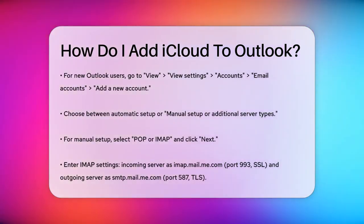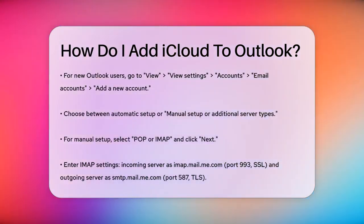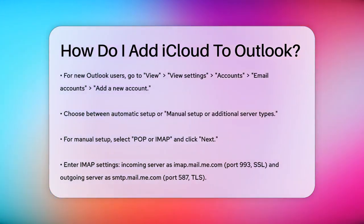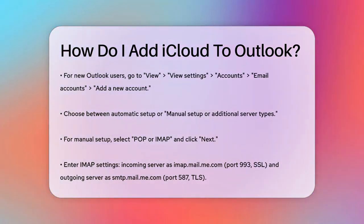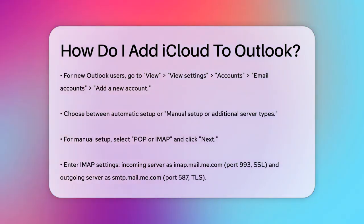In the Add Account dialog box, you can either let Outlook try to set it up automatically or select Manual Setup or Additional Server Types. For Manual Setup, choose POP or IMAP and click Next.